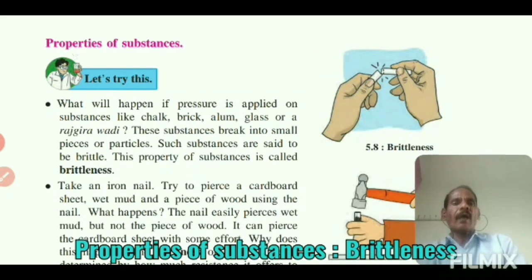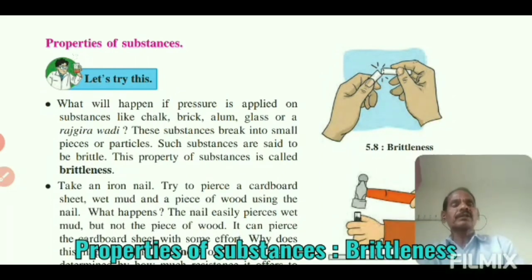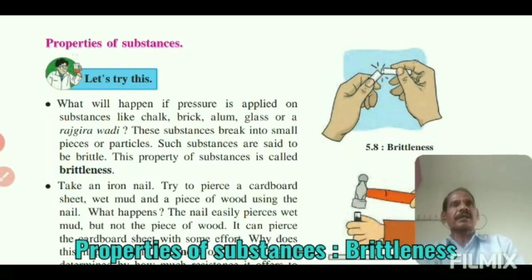What will happen if pressure is applied on substances like chalk, brick, alum, glass, and a bangle? These substances break into small pieces. Such substances are said to be brittle. This property of the substance is called brittleness.